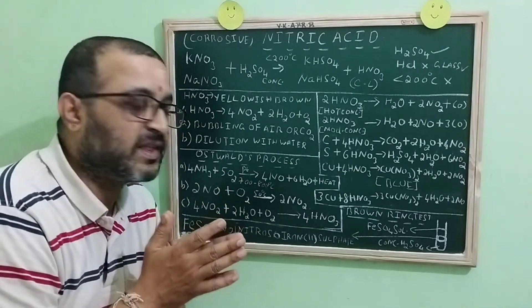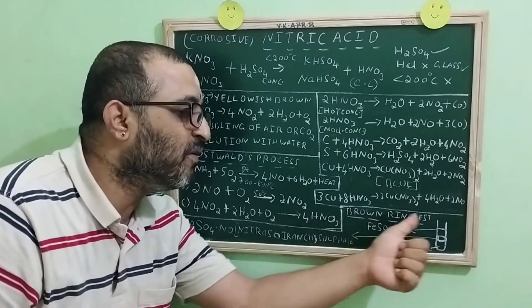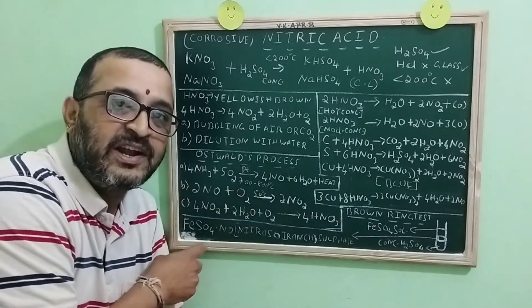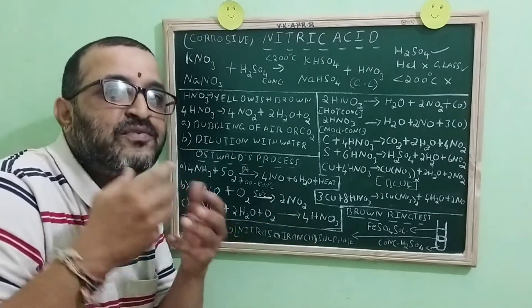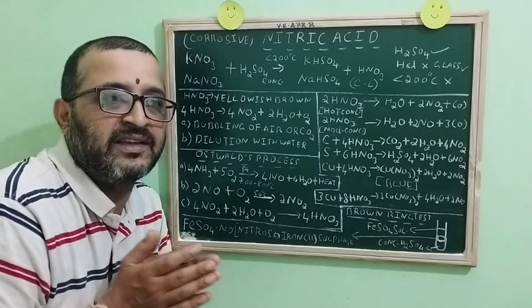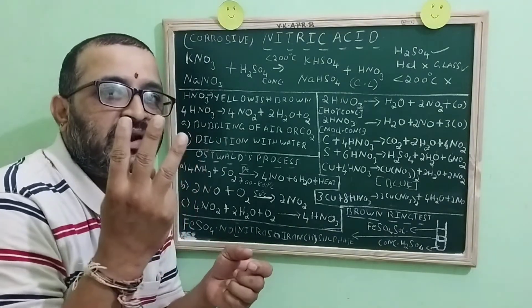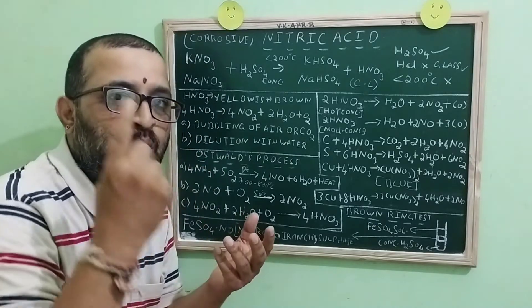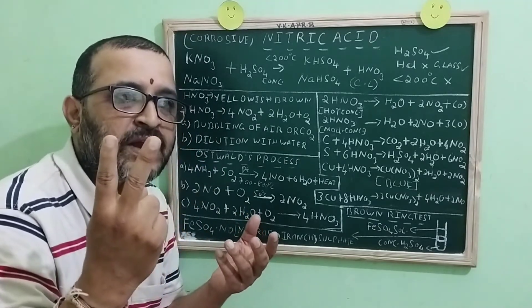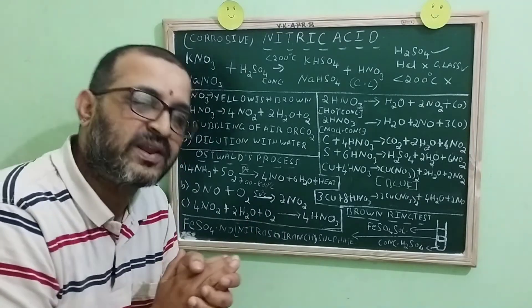The most important test for nitric acid is brown ring test. What is brown ring composition? Nitroso ferrous sulfate. That is FeSO4·NO. How do you do this brown ring test? Very simple. We require three things. One is nitric acid. Second one is freshly prepared ferrous sulfate. And next one is concentrated sulfuric acid.